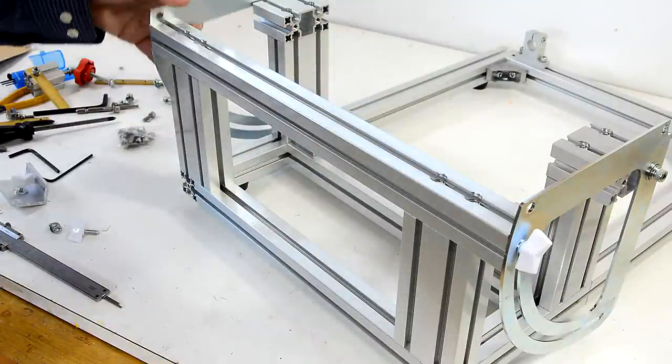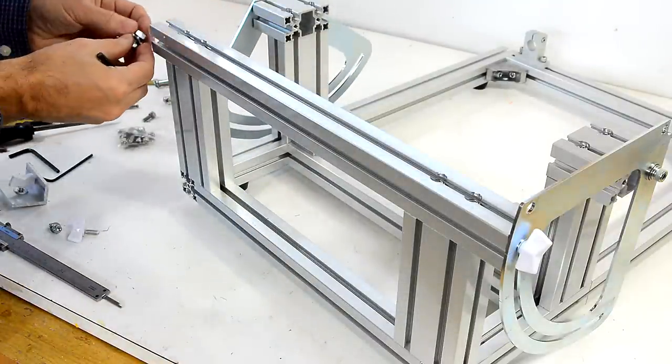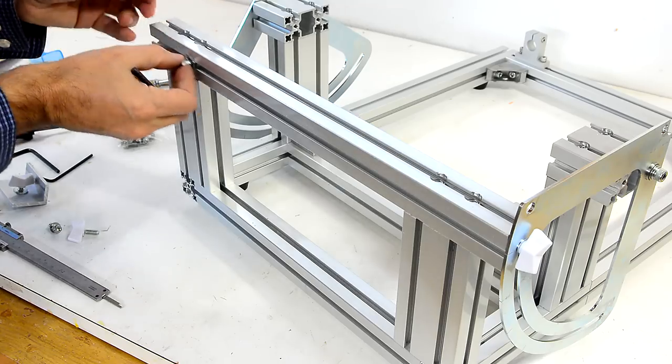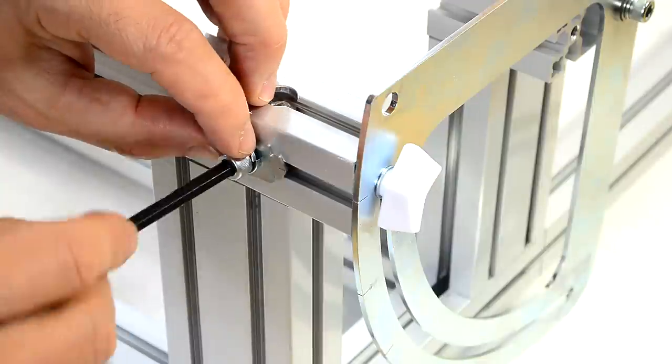Now I can put the angle lock knob in here. And this is why the distance in here is so important. Because otherwise this will bind in the slot here.